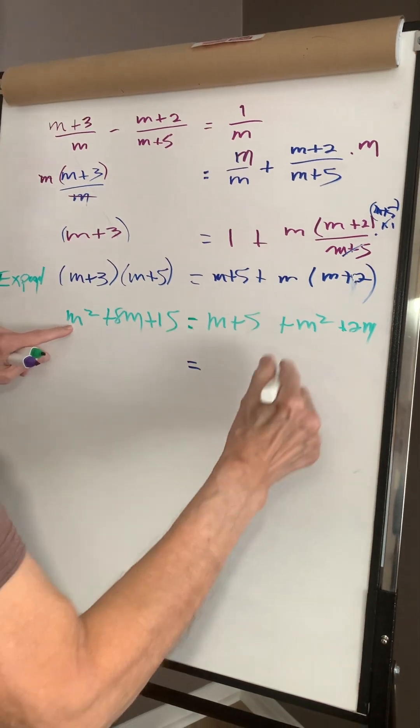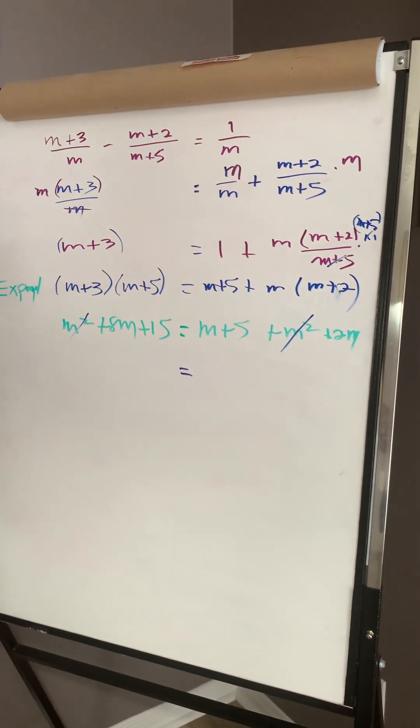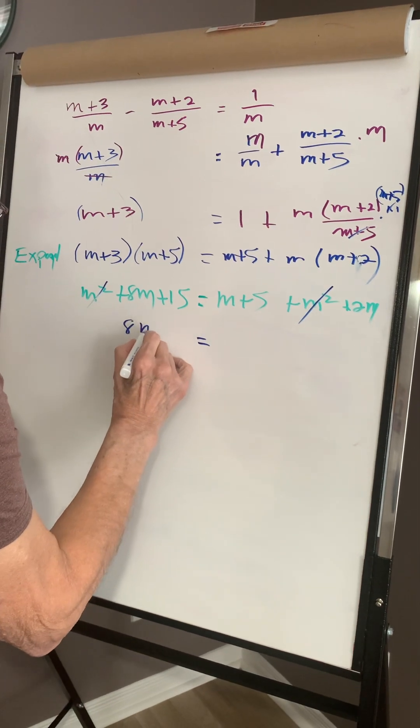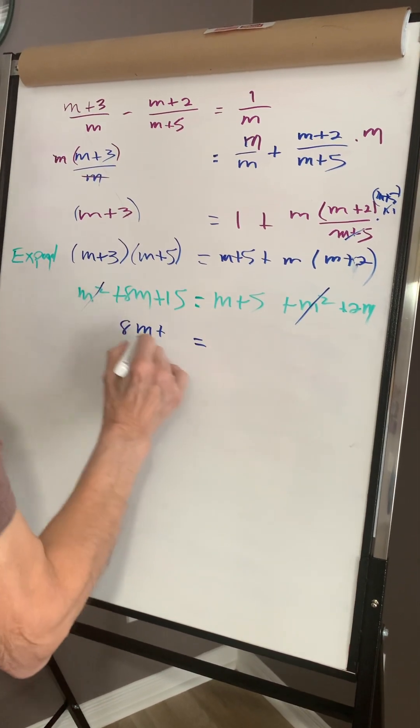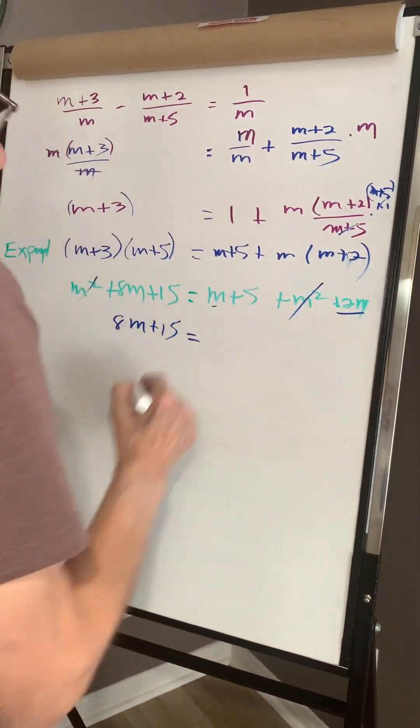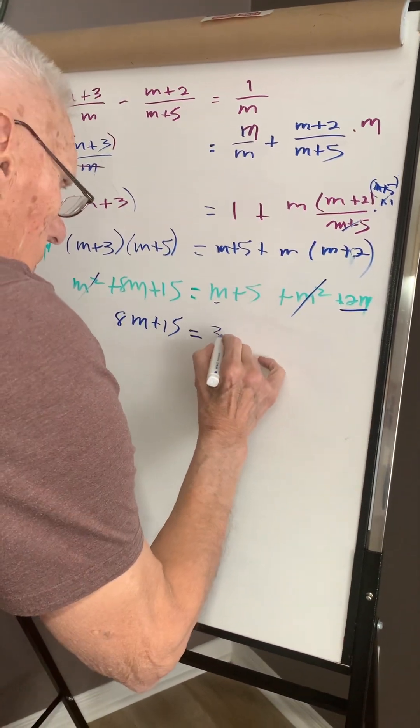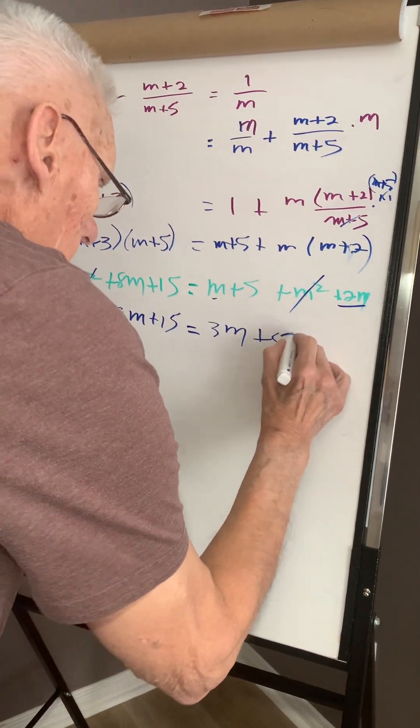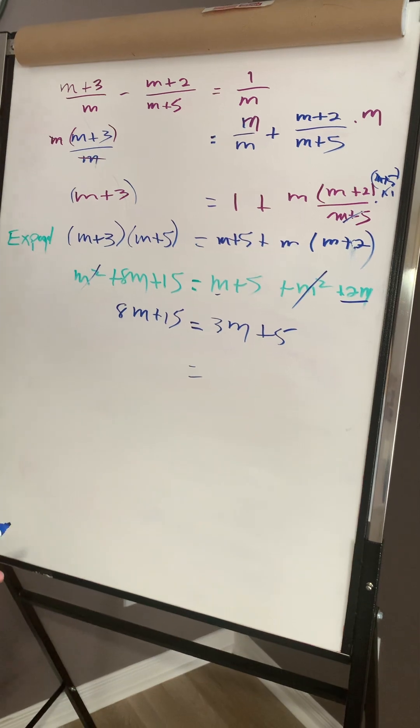So both sides have an m squared, and then we have eight m, and I have an m, collect terms to make three m, and then I have a five. Okay, we'll leave the equal sign where it is.